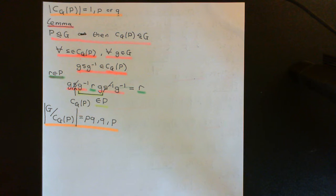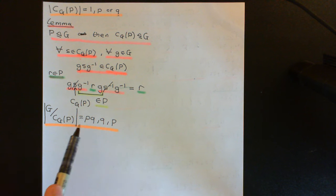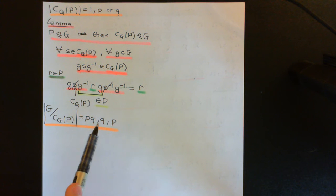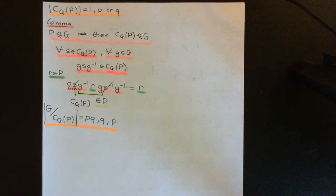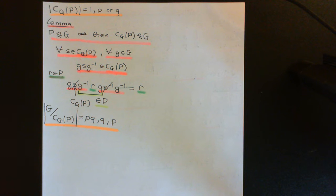We can quotient G out by the centraliser of capital P in G, and the order of the quotient group we get must be either P times Q, P, or Q — but it's not going to equal 1, because we've assumed that the centraliser of P in G is not equal to the entire group; it's not the improper subgroup. Now we're going to use this to arrive at a contradiction, but first we need to study this quotient group in more detail — we need to understand what the cosets that the centraliser of P in G divides G into actually represent.